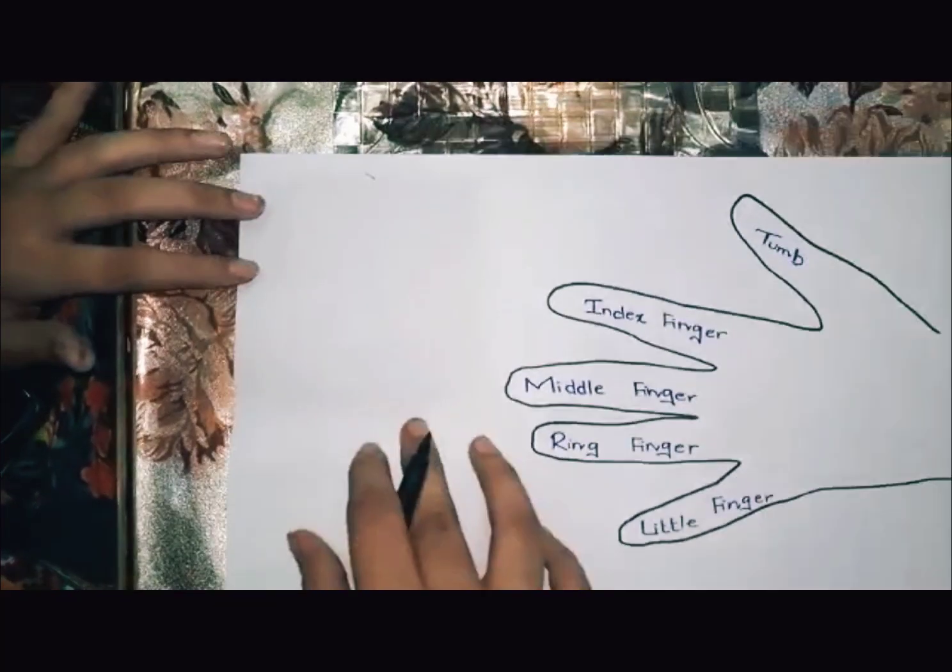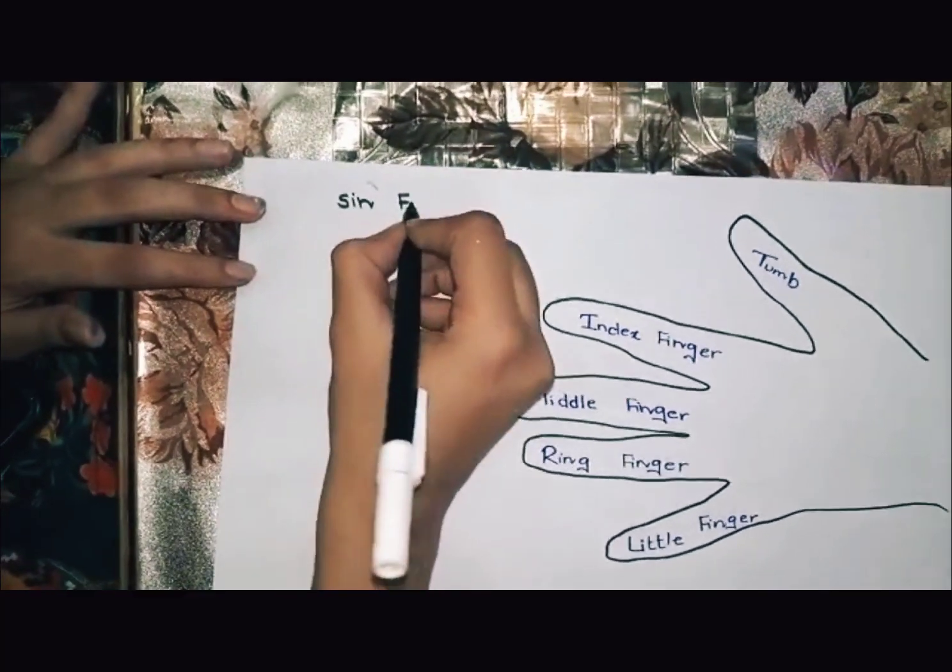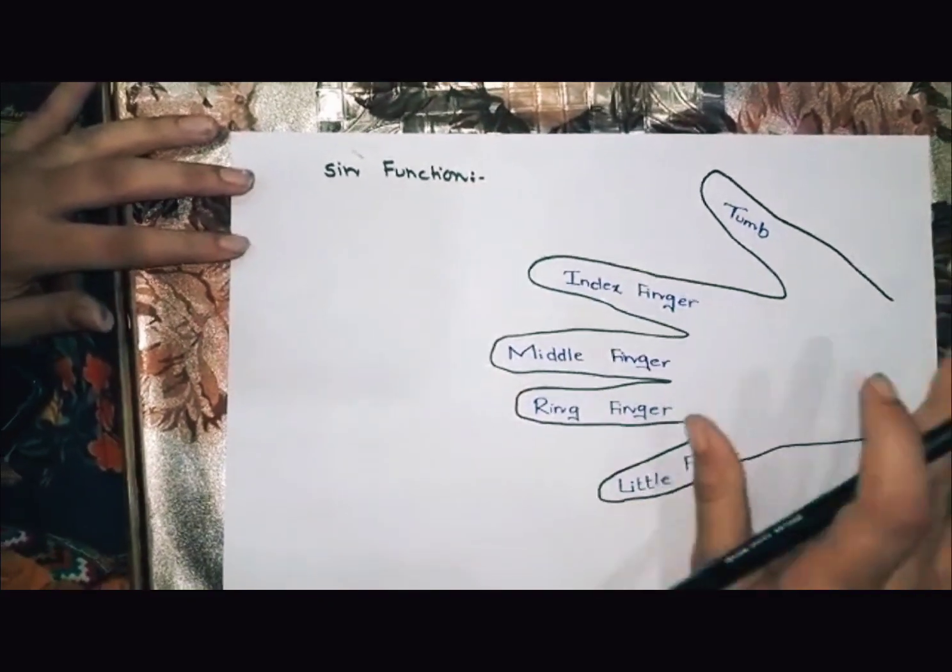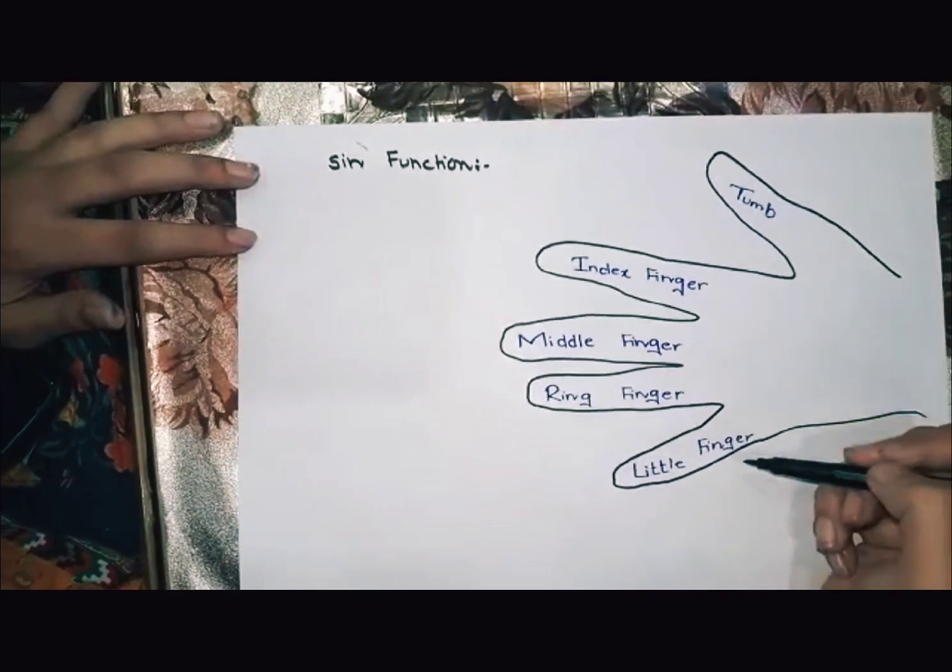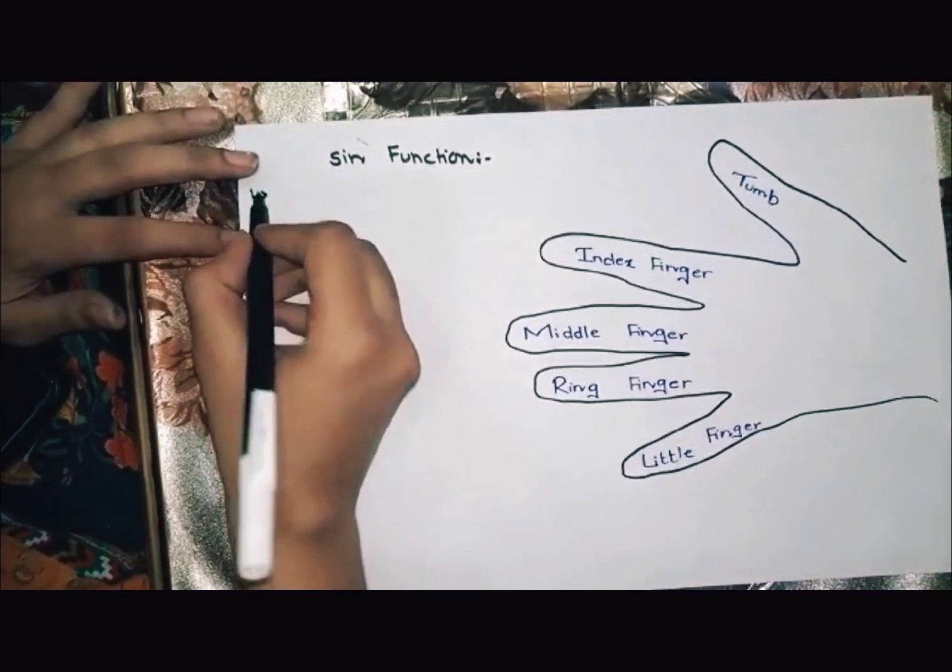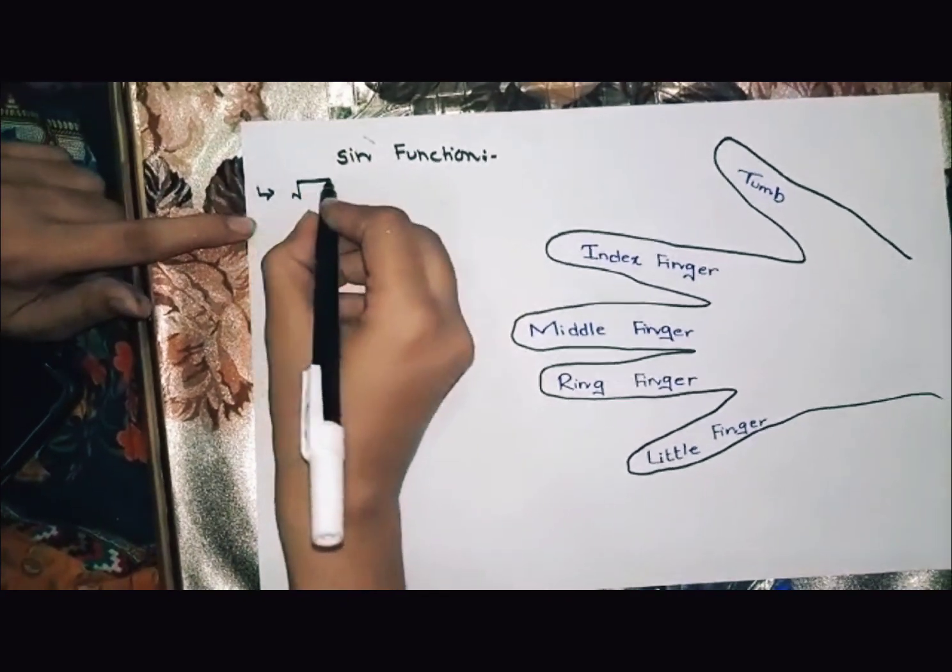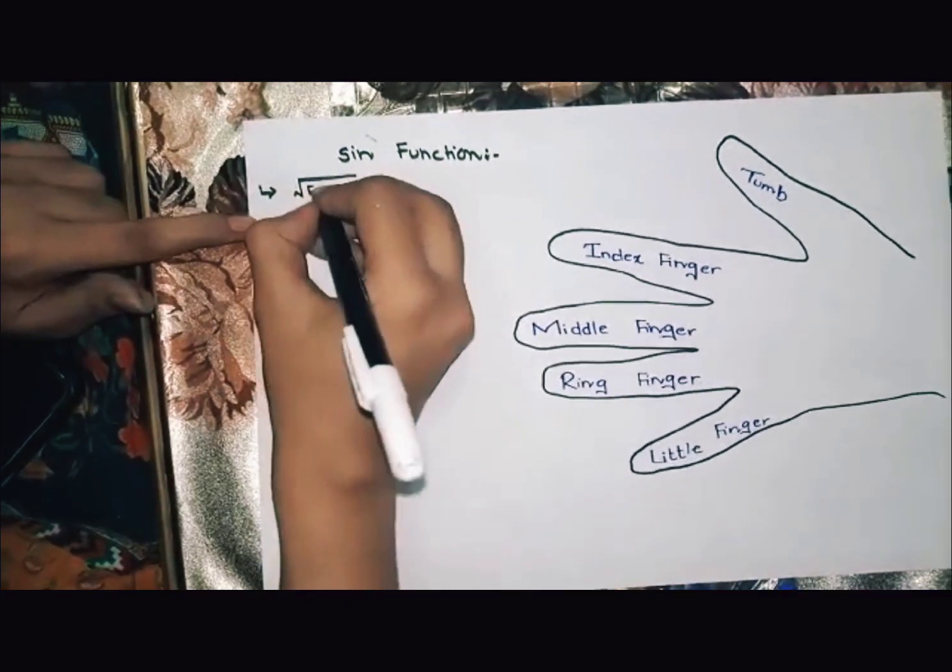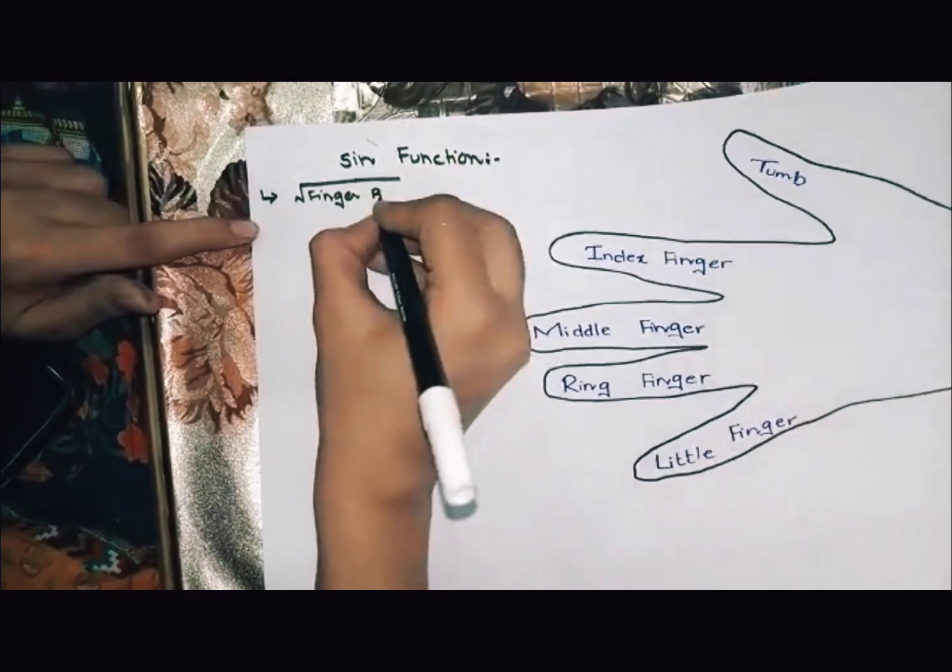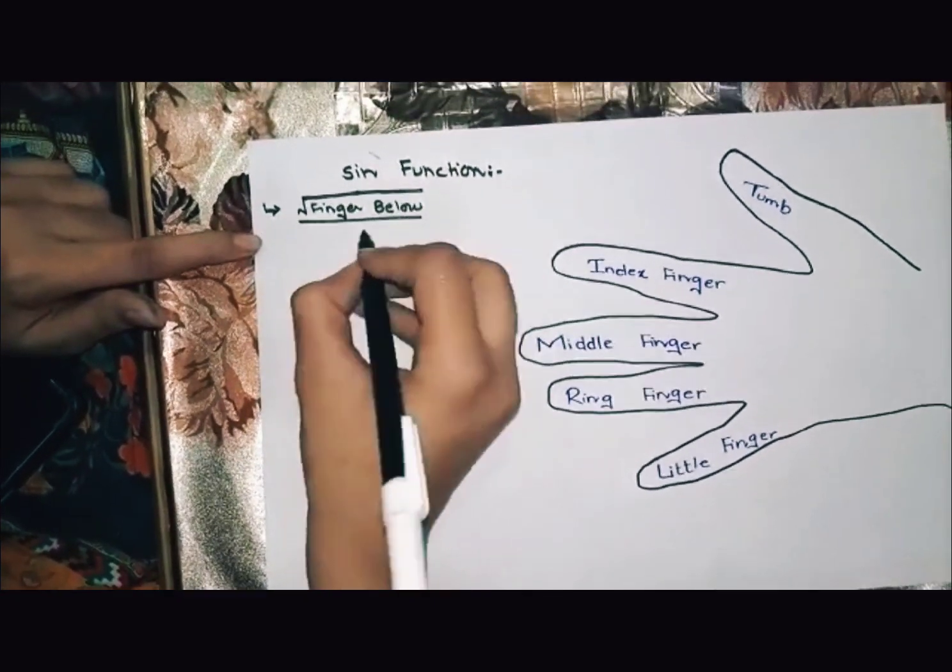First, we find trigonometry for sine function. Now, very easy, we use a trick. We will find the formula. The formula is very easy. The formula is finger below divided by 2.